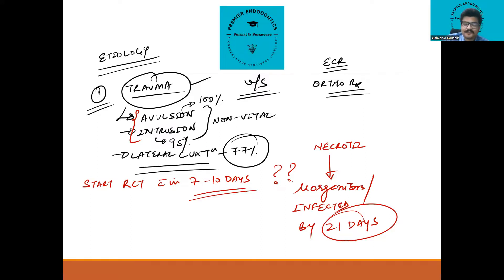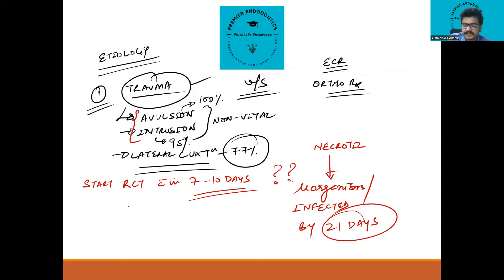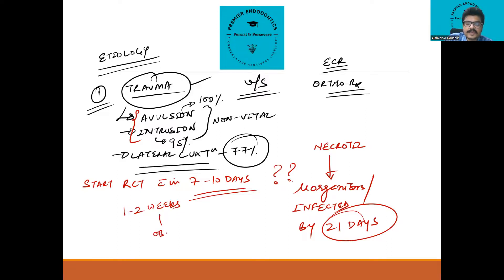If you start root canal treatment timely within the first week, then your treatment protocol is shorter. You do your access opening, cleaning and shaping, and give a calcium hydroxide dressing for only 1 to 2 weeks. That is sufficient. After that, obturate and keep the patient on follow-up.